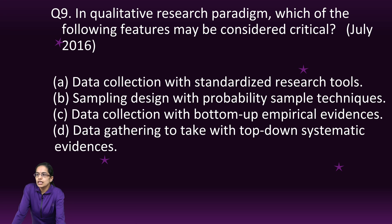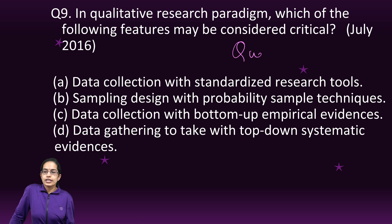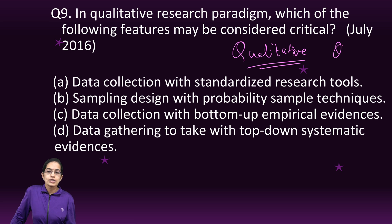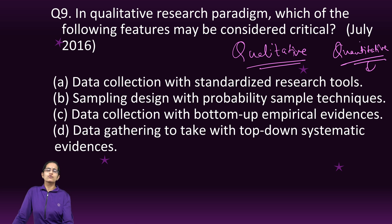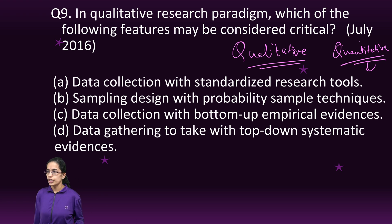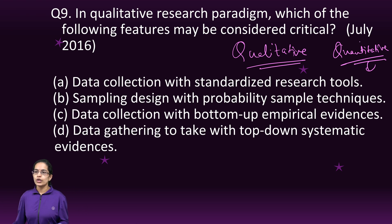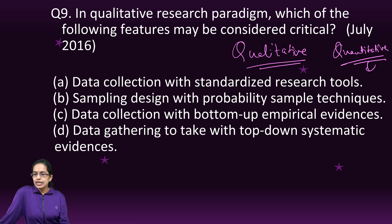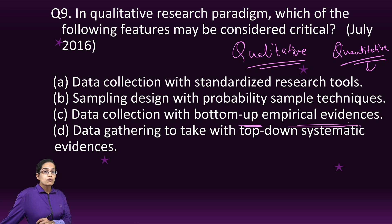The next question is about qualitative research. Qualitative focuses on quality — like emotions and feelings — while quantitative focuses on numbers, applying statistical tests to produce findings. In qualitative research, data collection with bottom-up empirical evidences is considered critical. What you have is observational evidence.